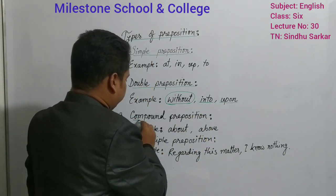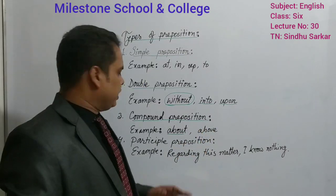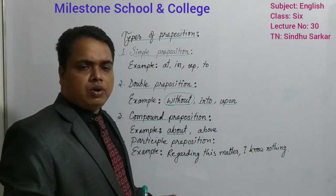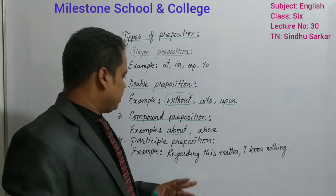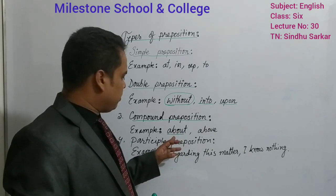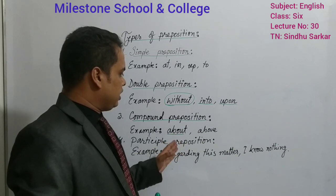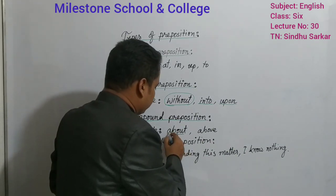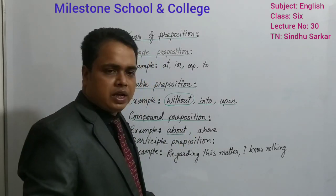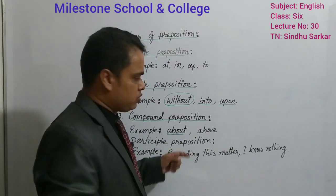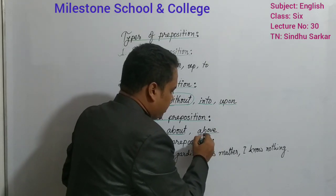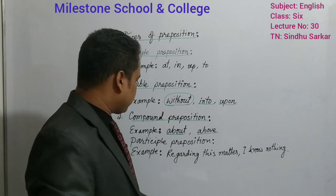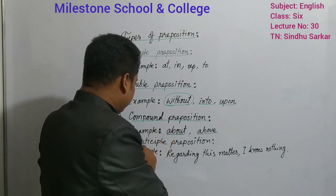Then, compound preposition. In case of compound preposition, before a noun, adjective, or adverb, if we get a simple preposition, then it is called compound preposition. Here, 'above' — within this preposition you will get on plus by plus out. Above: you will get on plus by plus up. This is called compound preposition.